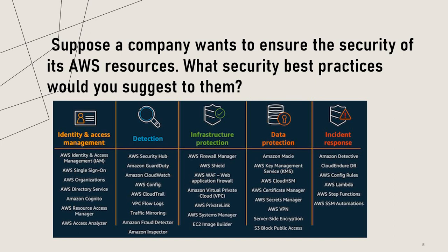Implement network security: use security groups, network ACLs, and VPC to implement network security and isolate AWS resources. Implement least privilege: use IAM policies and roles to implement the least privilege principle and ensure that users have only the necessary permissions to access AWS resources.